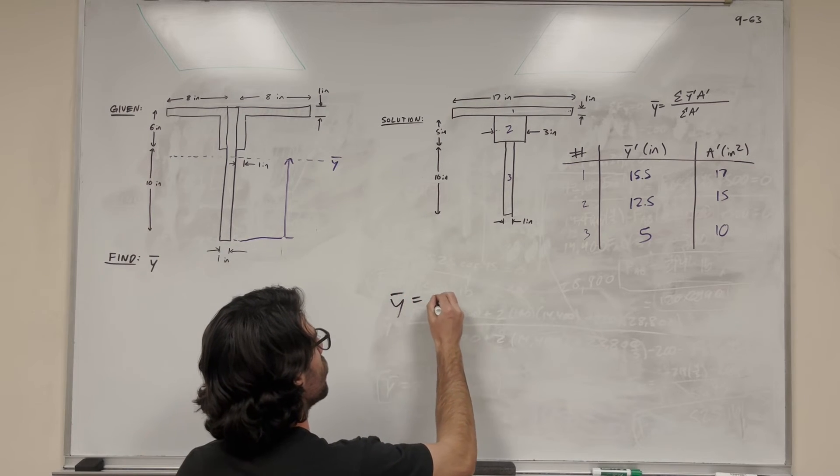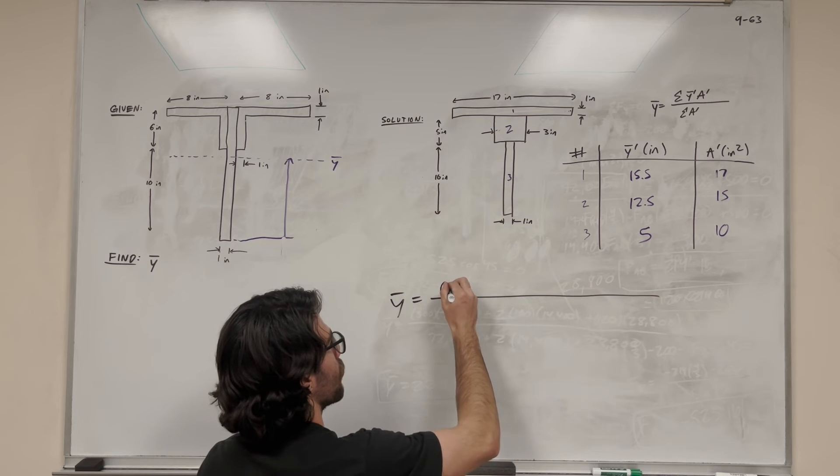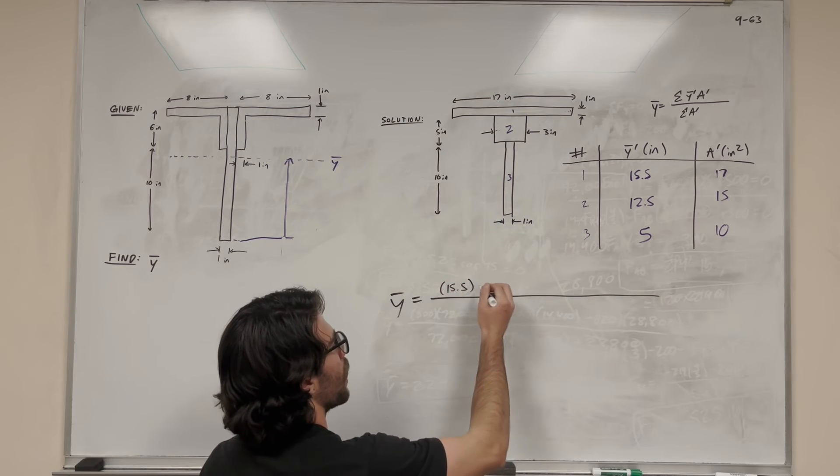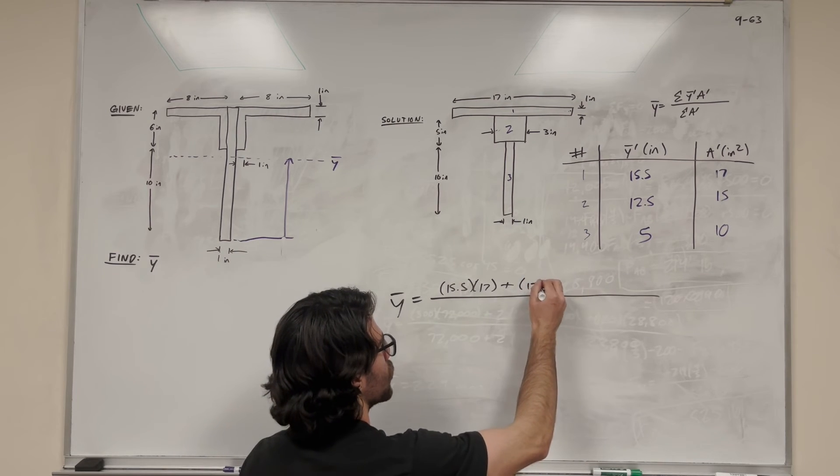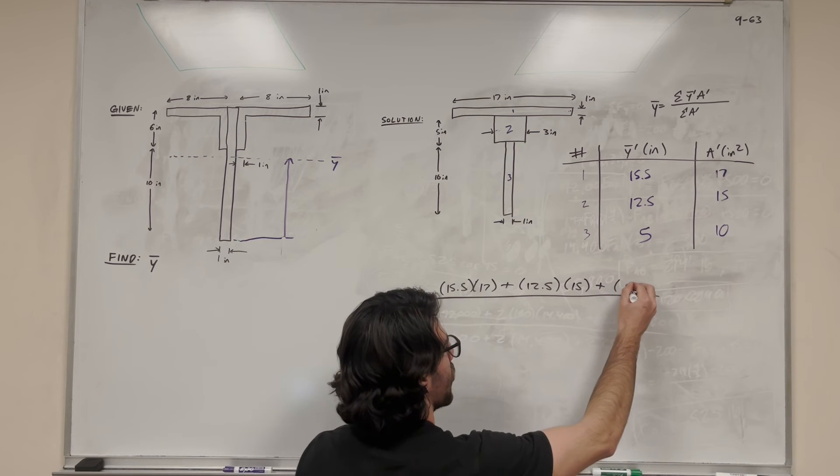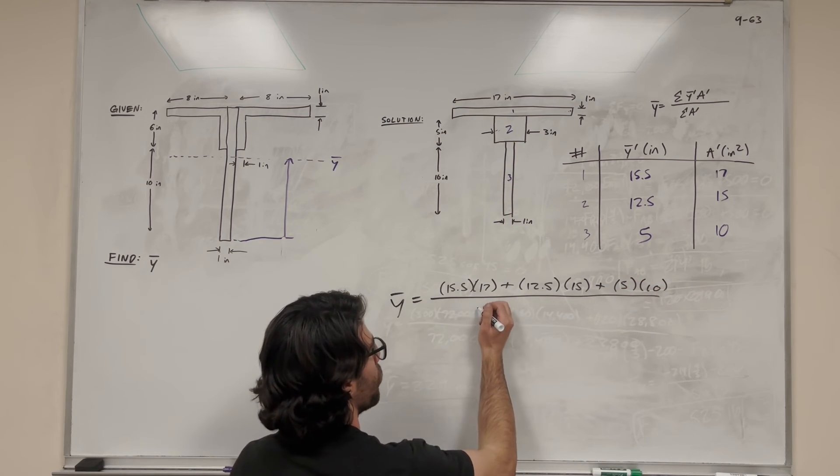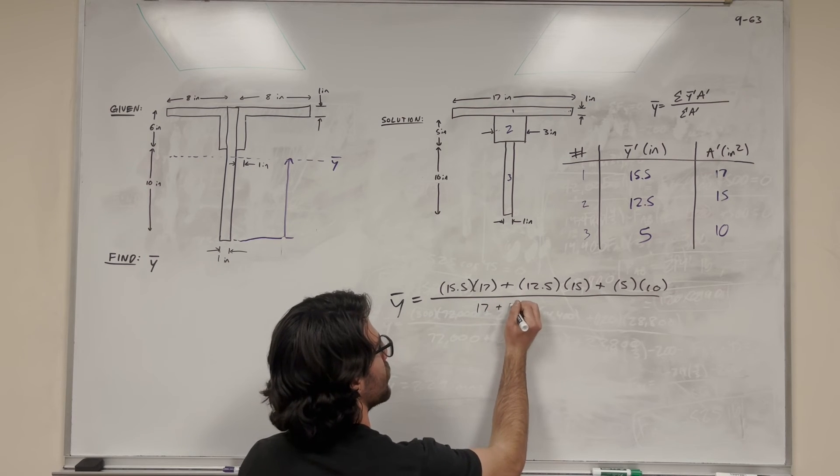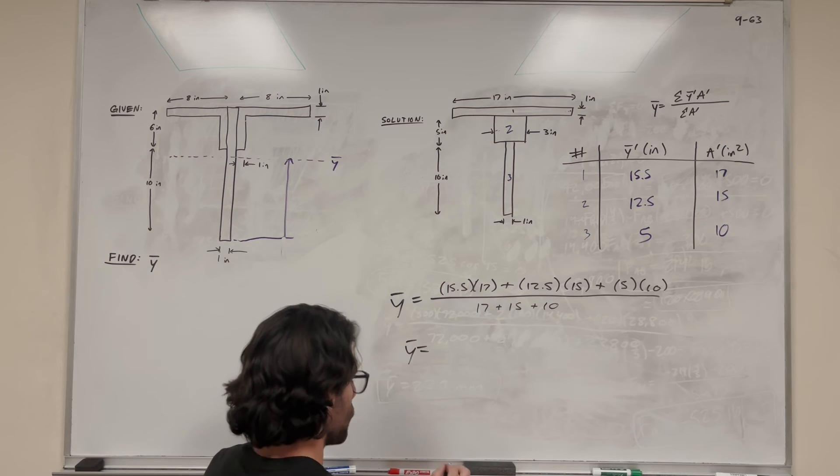So Y bar, here we have it. So it's going to be the Y bar prime, which is the first one, 15.5, multiplied by its area, 17. Then we're going to add it to the next shape, which is 2. So it's 12.5 times 15. Then we're going to add it to the next shape, which is 5 times 10. And on the bottom, all we need to do is add up all the areas. So 17 plus 15 plus 10, just like the equation says to do.